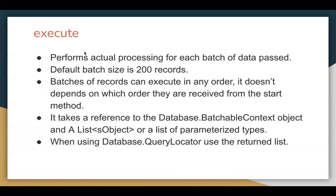The execute method is where you define the business logic that runs when Batch Apex executes. It runs every time for each batch — for example, if you have 20 batches it runs 20 times. It performs the actual processing for each batch of data. The default batch size is 200 records. Batches can be executed in any order regardless of how they are received from the start method. It takes a reference to the Database.BatchableContext object and a list of SObjects or parameterized types.